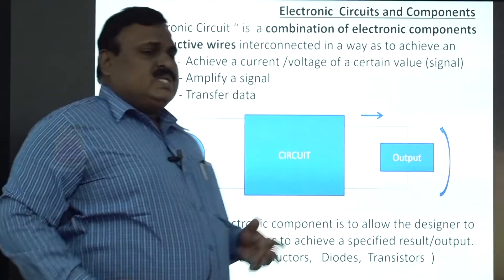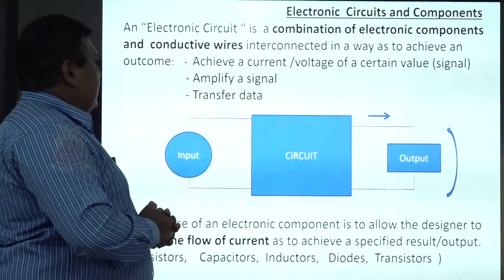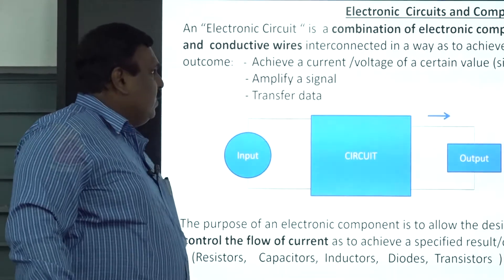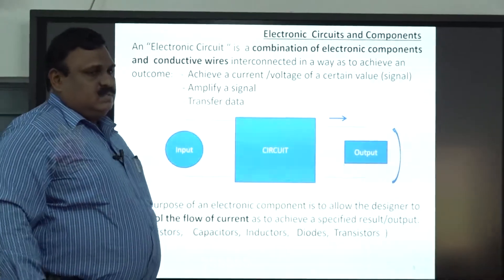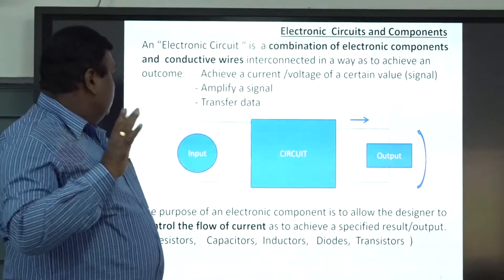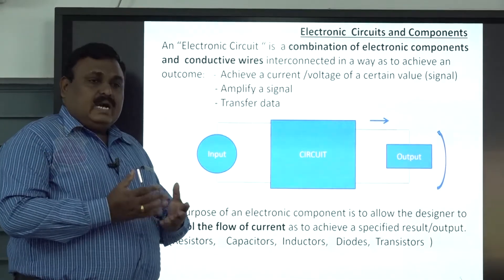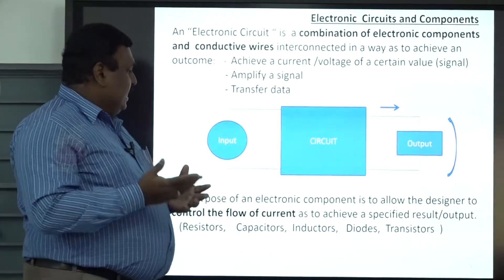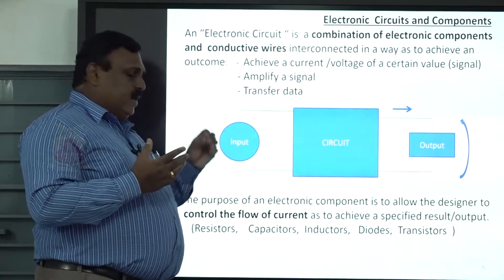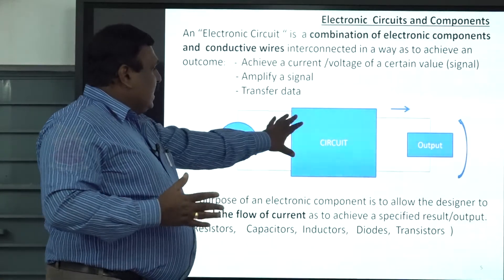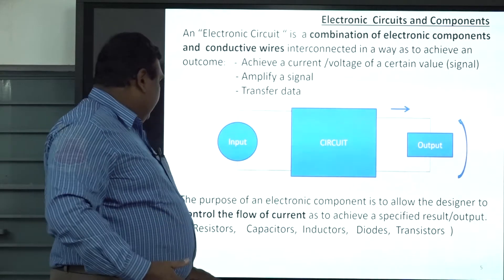These are the milestones of electronics. In electronic circuits and components, you are using resistors, capacitors, inductors, and transistors. Using these components combined in circuits, we may use them for amplification and data transfer. In every circuit, there is one input, one circuit, and one output, where the circuit is employed by using the power supply.